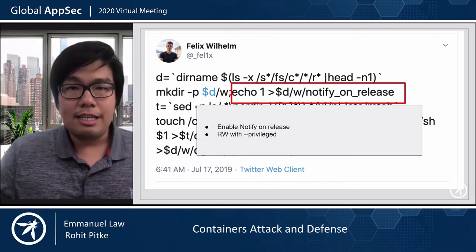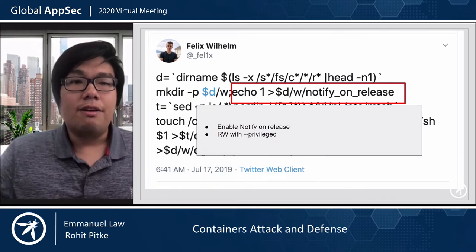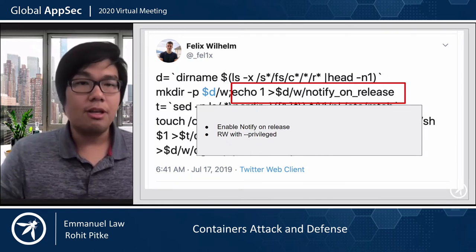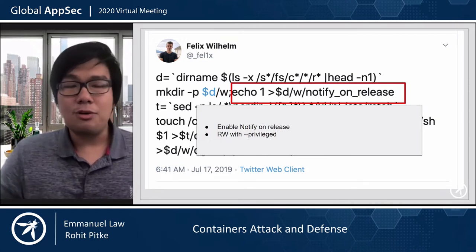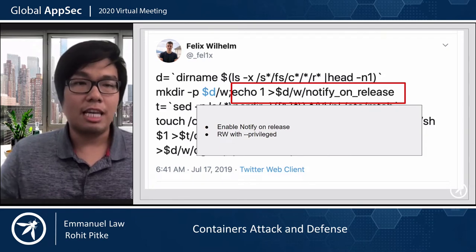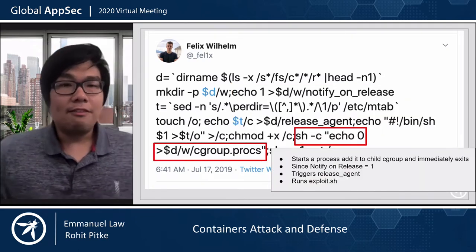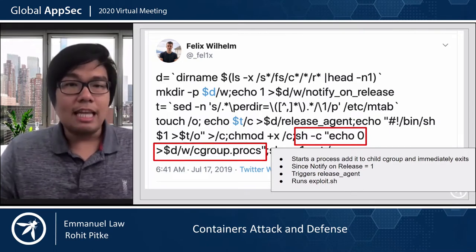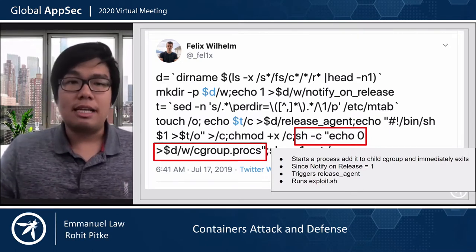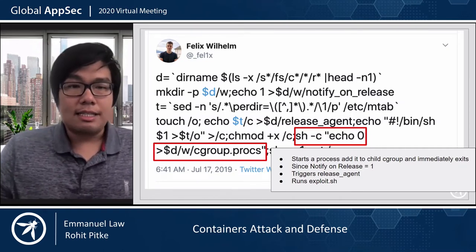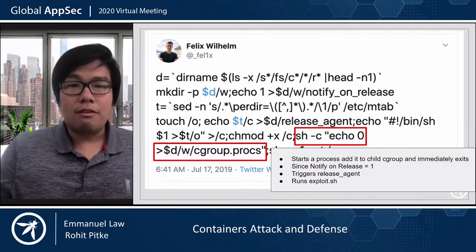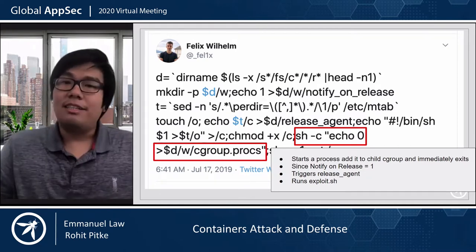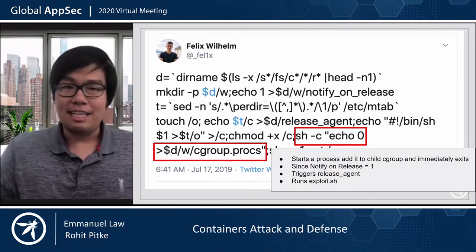The third step is to configure the release agent to run the exploit.sh we created in step one. The path for this file needs to be from the host's point of view, which is why we need the path mapping from step one. Next, enable the release agent via notify_on_release — once enabled, it says that when there are no more processes running in that cgroup, notify the release agent. In privileged containers, you get read-write capability for this. The final step ties it all together: start a process, add it to a child cgroup, and it immediately exits — so there's no process tied to that cgroup. This triggers the release agent, which runs your exploit.sh. And that is how you break out of a privileged container in 140 characters.